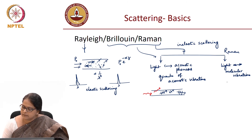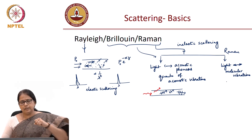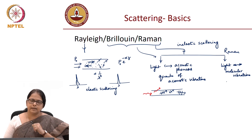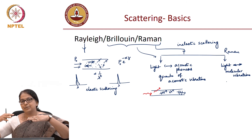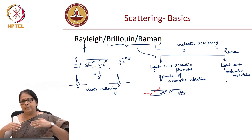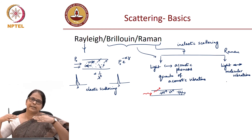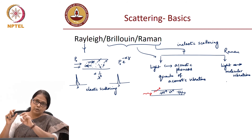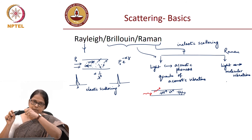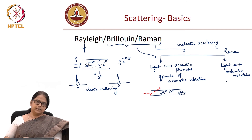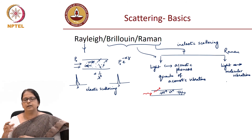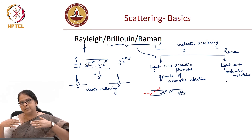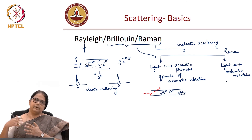The essential difference is that Raman scattering happens when the photon or electromagnetic wave interacts with individual molecules, whereas Brillouin scattering happens when it interacts with the acoustic waves of the system. Because Brillouin scattering involves interaction of waves, we talk about phase matching conditions in Brillouin scattering. Whereas in Raman scattering, it is interaction of light with the medium directly, so there is no phase matching involved — only energy matching conditions. Because of this, Raman scattering occurs in all directions, whereas in Brillouin scattering, there are certain allowed directions due to the phase matching requirement.